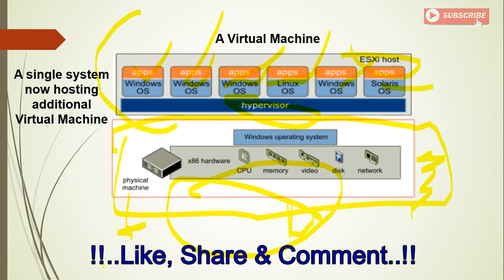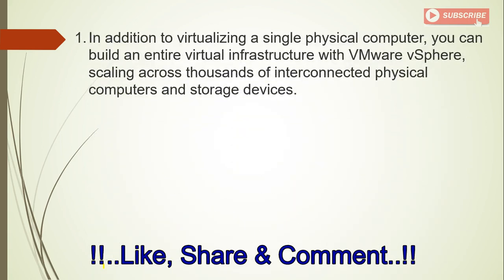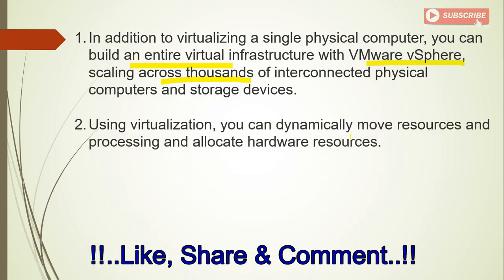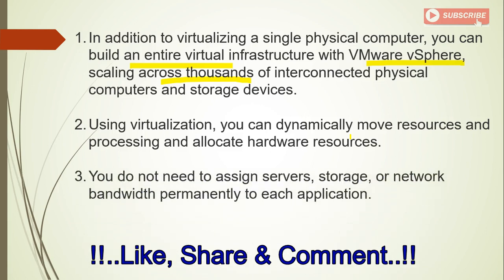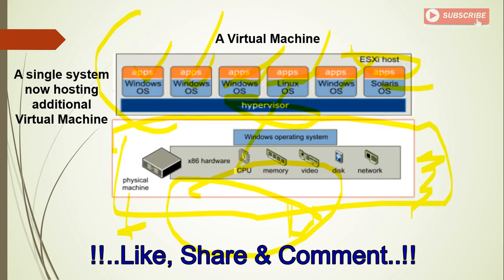In addition to virtualizing a single physical computer, you can build an entire virtual infrastructure with VMware vSphere, scaling across thousands of interconnected physical computers and storage devices. For an enterprise-level network infrastructure, you can use multiple storage devices, computers, and servers all connected together. Using virtualization, you can also dynamically move resources and allocate hardware resources — for example, specifying how much RAM or processor a Linux VM should use from the physical machine.